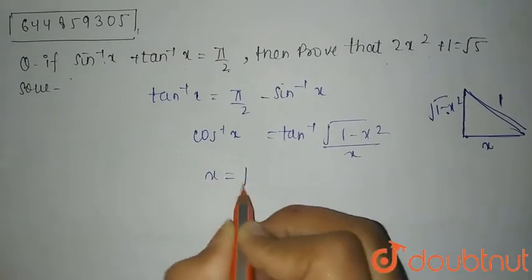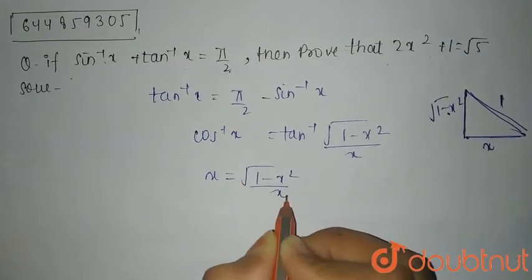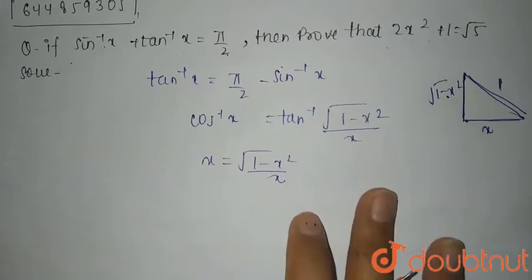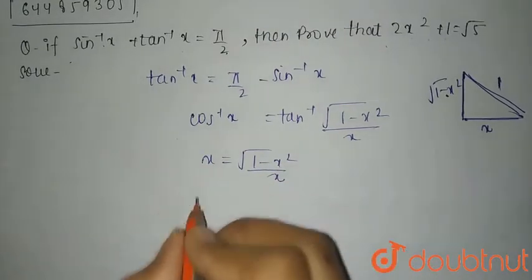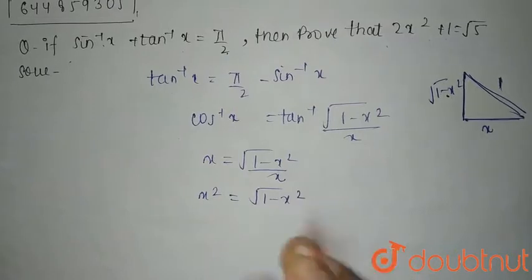So you can say that x equals root of 1 minus x square divided by x. That comes out to be x square equals root of 1 minus x square.